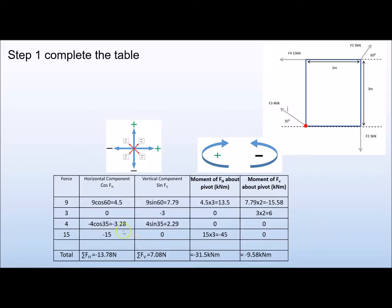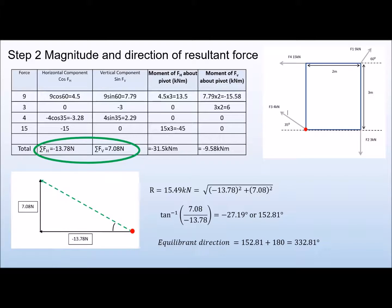All that's left is to total up each column. We use the horizontal and vertical component totals to determine our resultant. We use the moment of force columns to calculate the total moment. Looking at the sign convention, we have −13 on the horizontal (heading left) and a positive vertical (heading upwards), so we have a right-angle triangle and the green dashed line will be our resultant force.